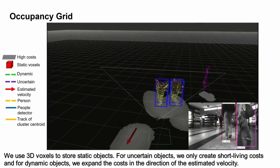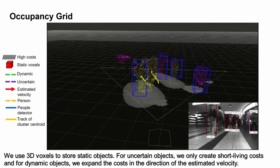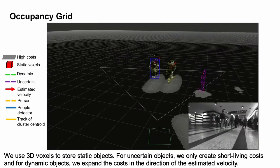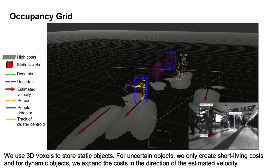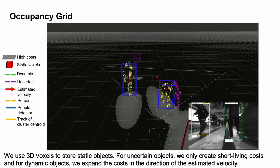We use 3D voxels to store static objects. For uncertain objects, we only create short-living costs, and for dynamic objects, we expand the costs in the direction of estimated velocity.